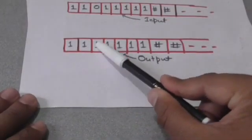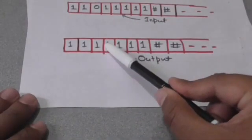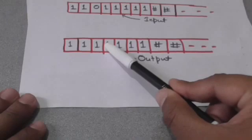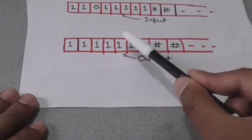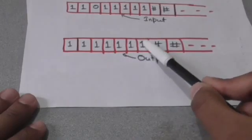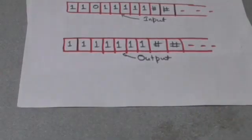To get Turing machine M to compute this function f(2, 5), initially the string of non-blank symbols 1 1 0 1 1 1 1 1 must be on the tape of Turing machine M, representing 2 and 5 separated by a zero.